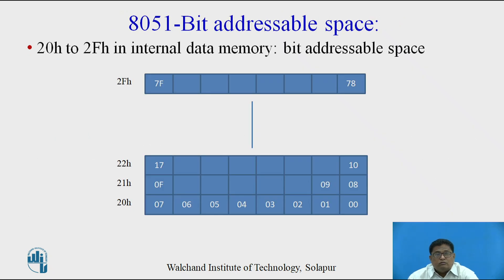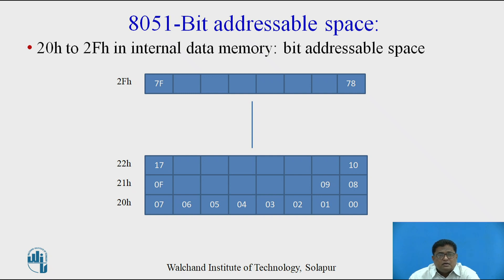Now, the bit addressable space. If you remember the memory organization in 8051, the total RAM is 256 bytes. Out of this, the lower 128 bytes are available to store data — this is called the data memory — and the upper 128 bytes is called the bit addressable space.